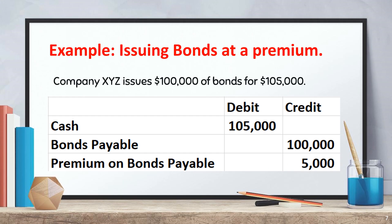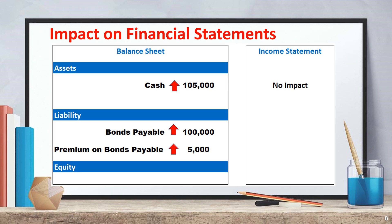Now let's look at issuing bonds at a premium. This occurs when bonds are sold for more than their face value. Example: Company XYZ issues $100,000 of bonds for $105,000. Journal entry: debit cash $105,000, credit bonds payable $100,000, credit premium on bonds payable $5,000. The premium represents a reduction in interest expense over the life of the bond, and cash increases by more than the face value.